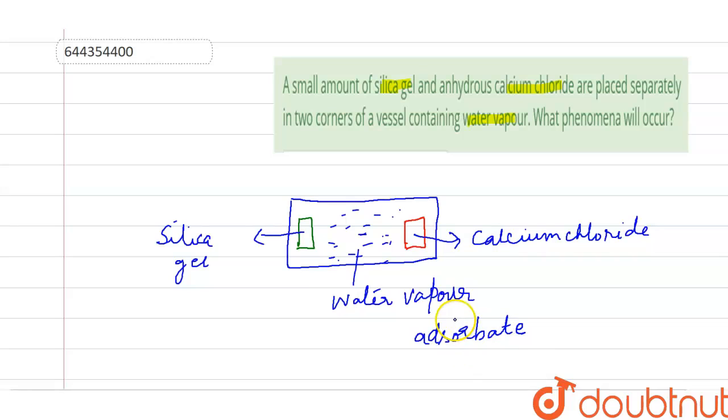Now silica gel and calcium chloride - they are good adsorbents. They are good adsorbents.